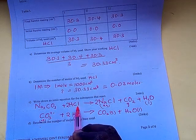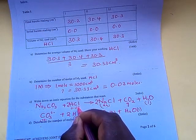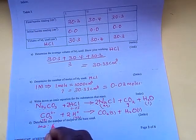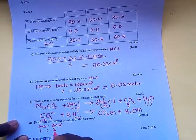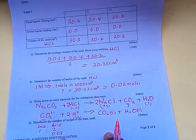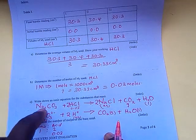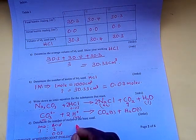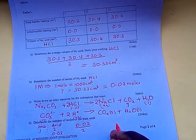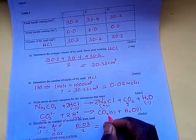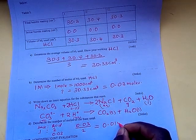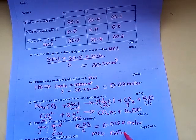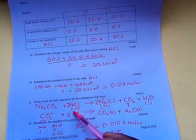We already know the number of moles of HCl that reacted: 0.03 moles. The mole ratio of carbonate to HCl is 1:2. So the moles of the base (sodium carbonate) is half the moles of the acid: 0.03 divided by 2, which equals 0.015 moles. The mole ratio in this equation is 1:2 — if 2 equals 0.03, then 1 equals 0.015.